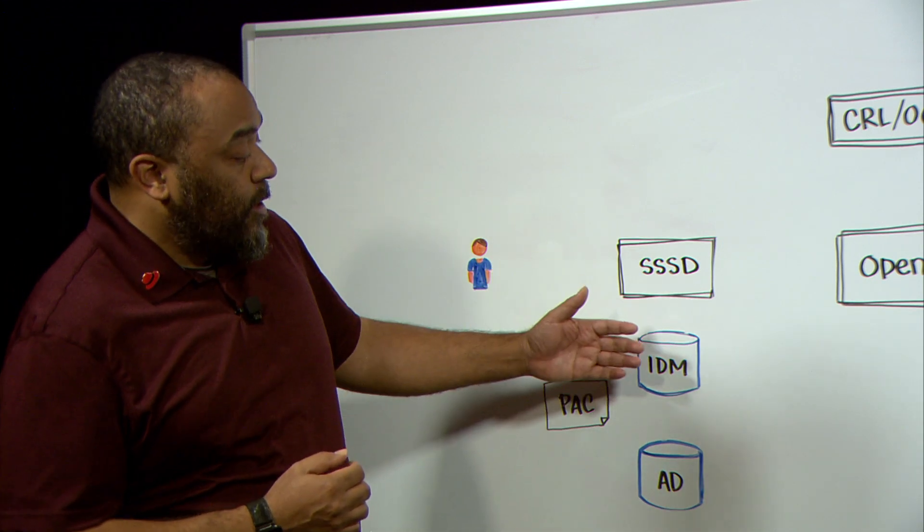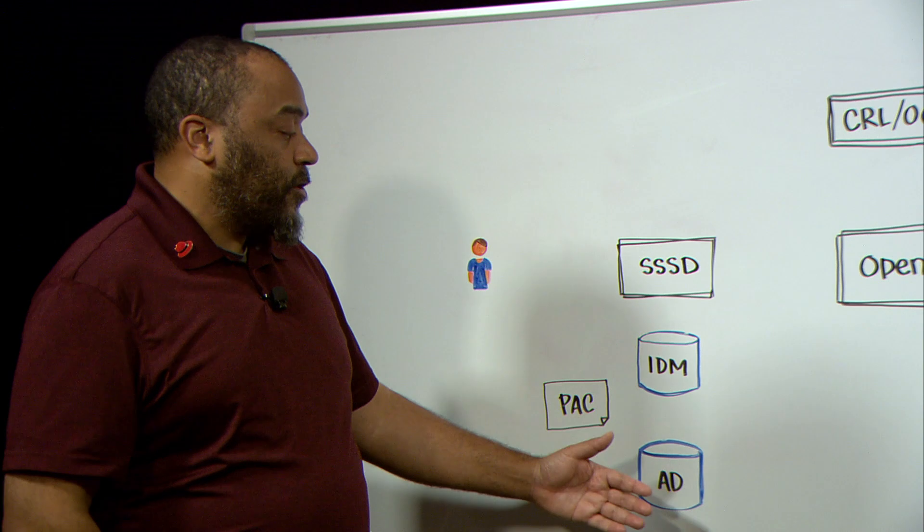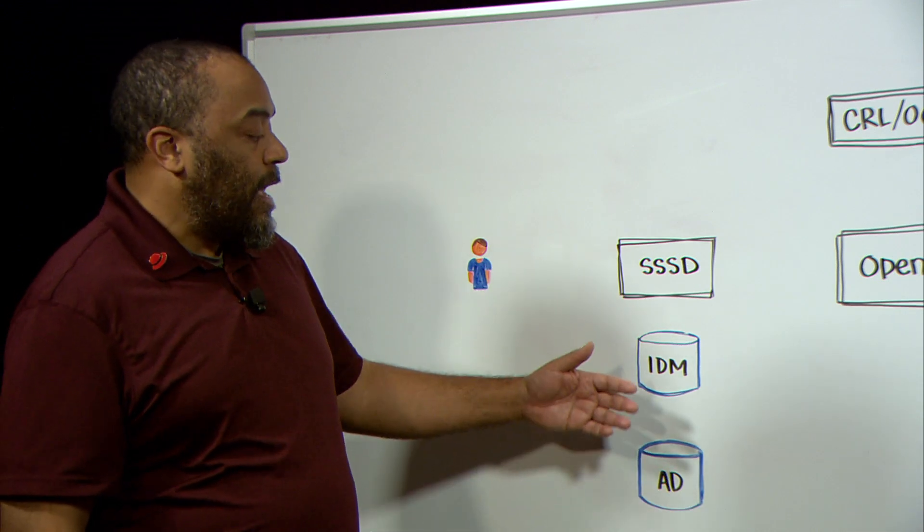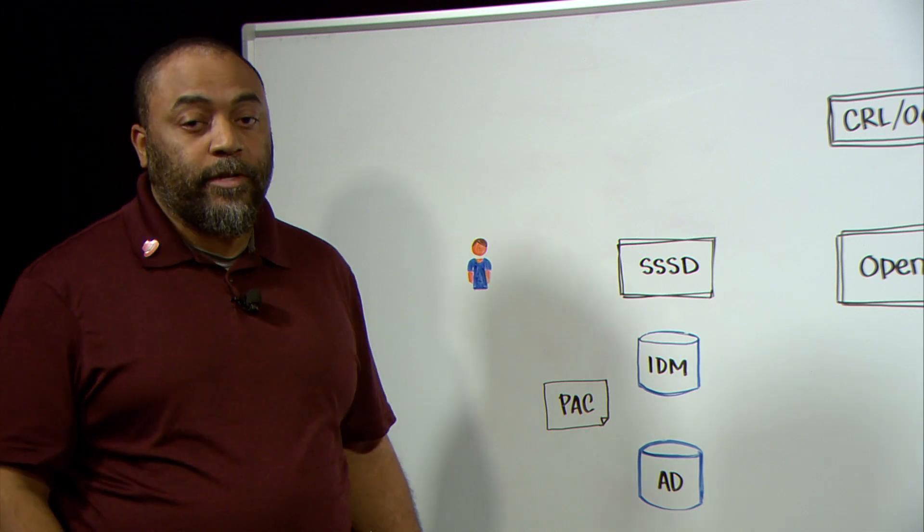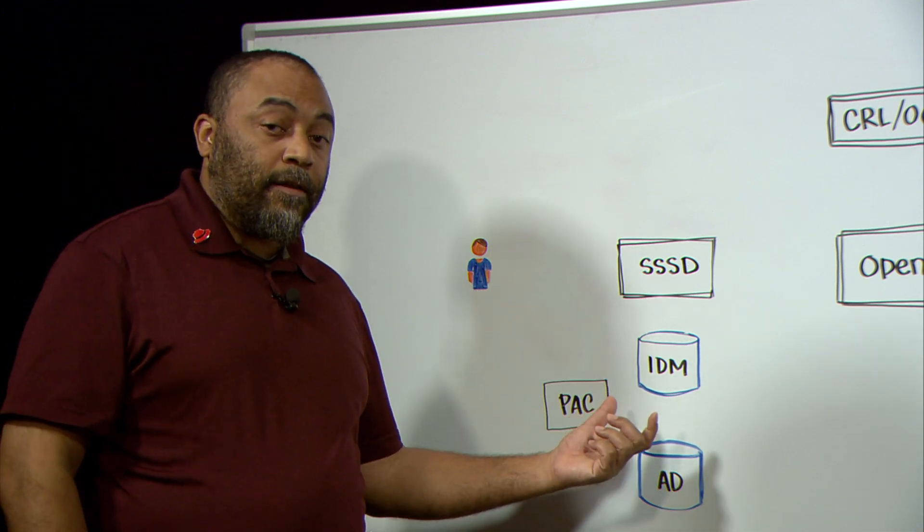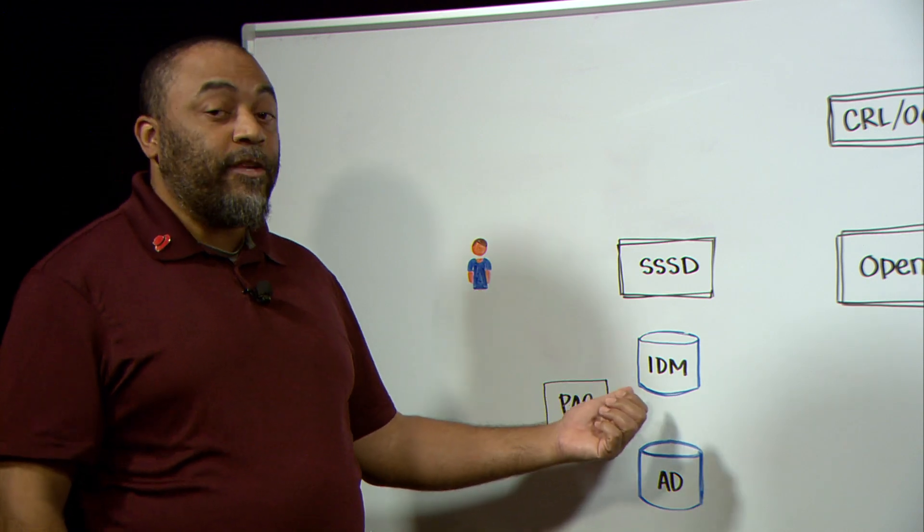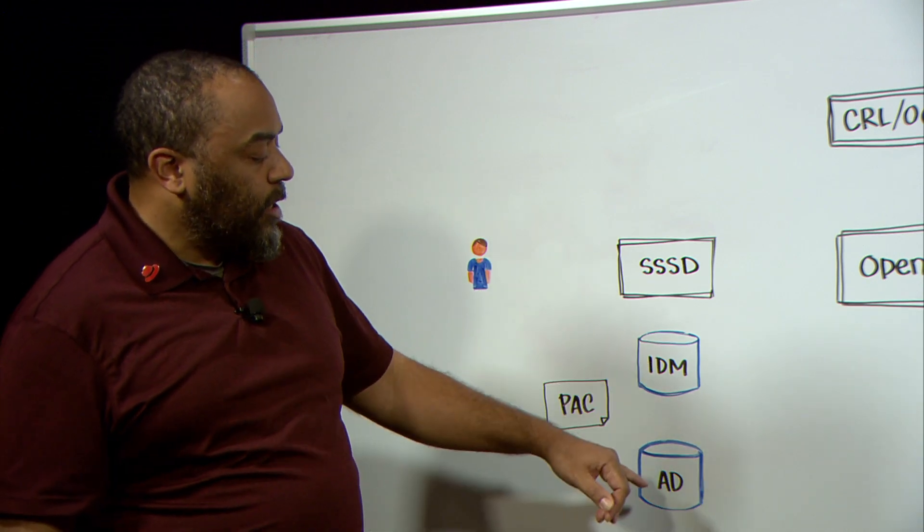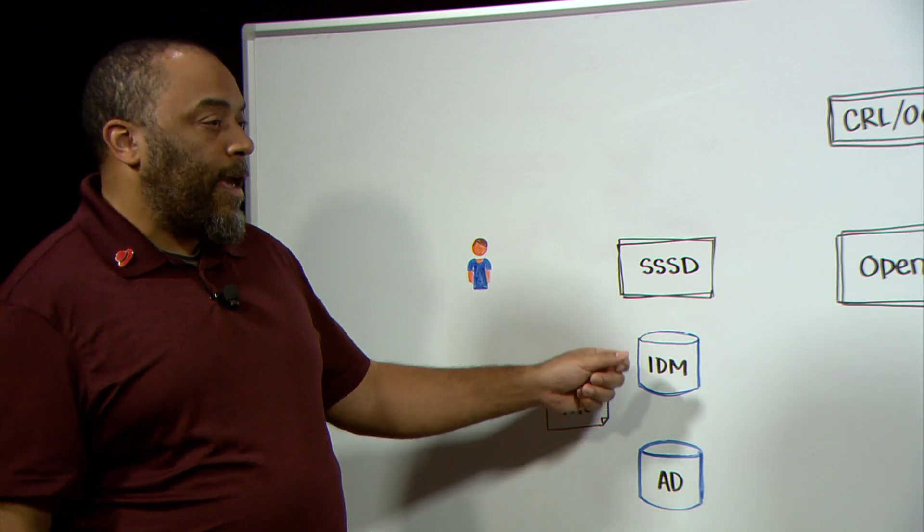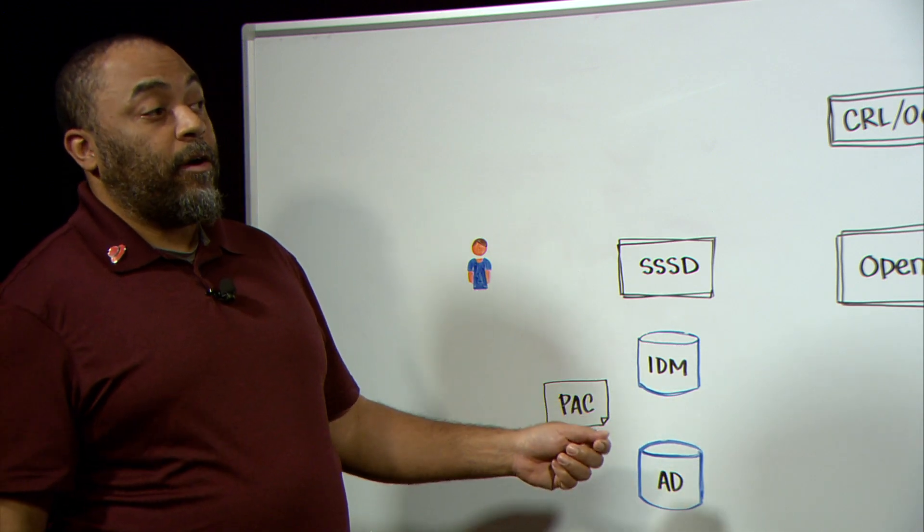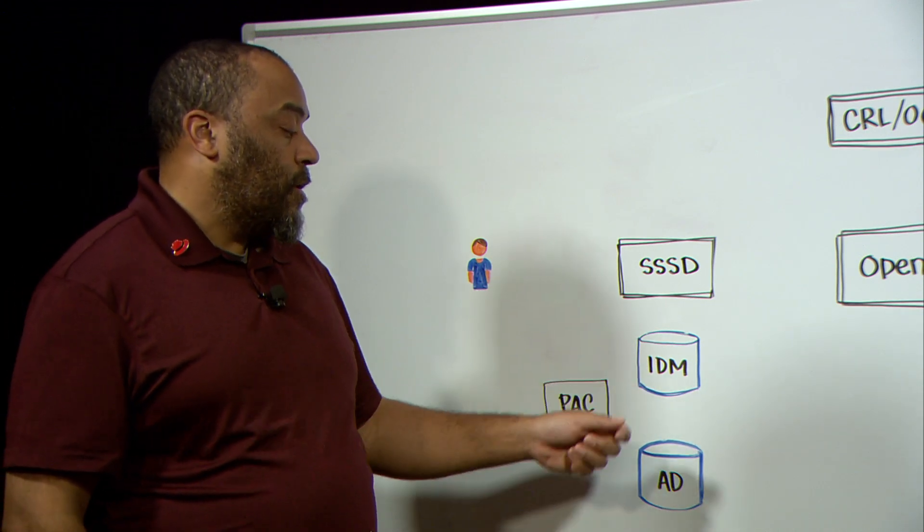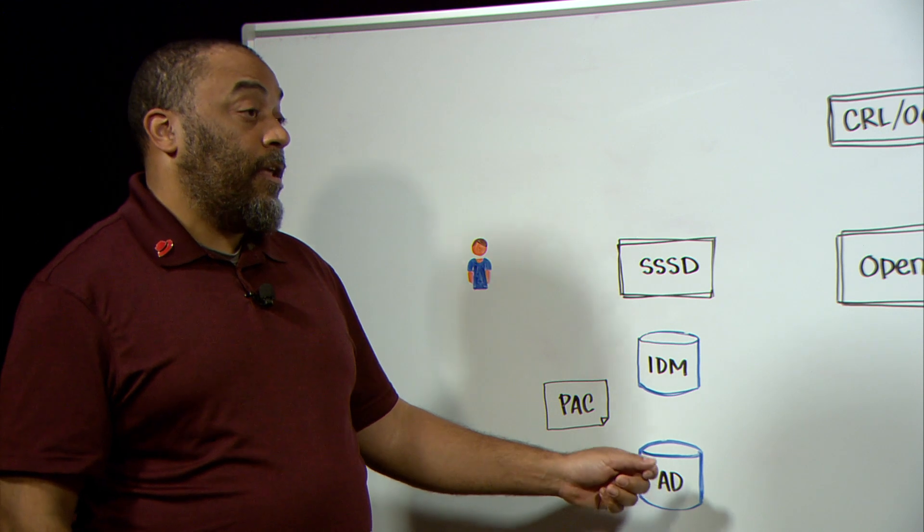So, after this, we then want to integrate in with Active Directory. That process is also fairly simple. It requires a couple more packages, Samba client and the IPA AD trust install. Once the command is run to join IDM to AD, it acts as a domain controller within that environment. That will allow Identity Manager to access the users that are in AD.